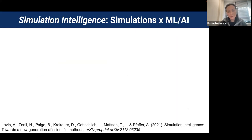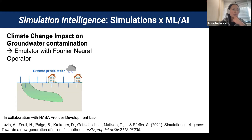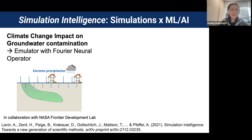Using this simulation capability, I demonstrate the intersection between simulation and machine learning AI — what people call simulation intelligence. I participated in a large paper collecting many applications, even from economics. Here I show two applications: one is to quantitatively evaluate climate change impact on groundwater contamination using an emulator with Fourier neural operators, in collaboration with NASA Frontier Development Lab. The second is physics-informed data integration using Bayesian hierarchical models with Gaussian process models.